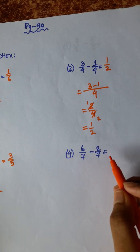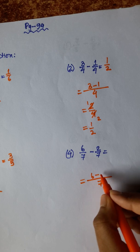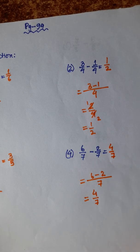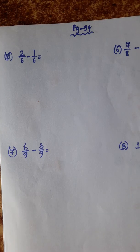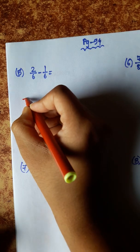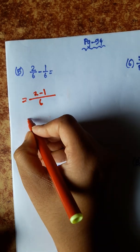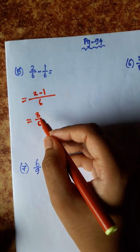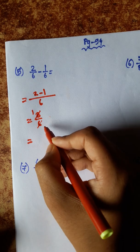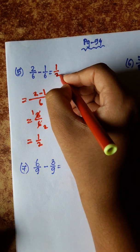Number 4: 6 by 7 minus 2 by 7 — denominator 7, 6 minus 2 is 4, so 4 by 7. Number 5: 2 by 6 minus 1 by 6 — denominator 6, numerator 2 minus 1 is 1, so 1 by 6... wait, 3 by 6. Cancelling: 3 divided by 3 is 1, 6 divided by 3 is 2 — so 1 by 2, or half.